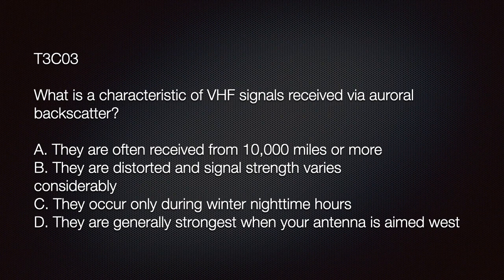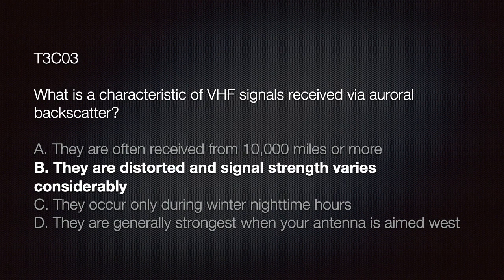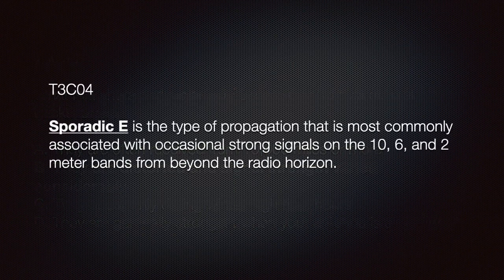The exam question is: what is the characteristic of a VHF signal received via auroral backscatter? A) they are often received from 10,000 miles or more; B) they are distorted and signal strength varies considerably; C) they occur during the winter nighttime hours; or D) they are generally strongest when your antenna is aimed west. The answer is B — they are distorted and the signal strength varies considerably.